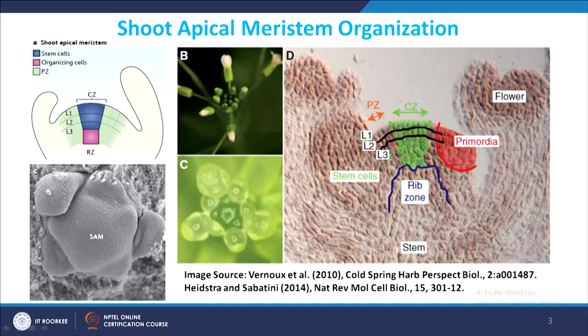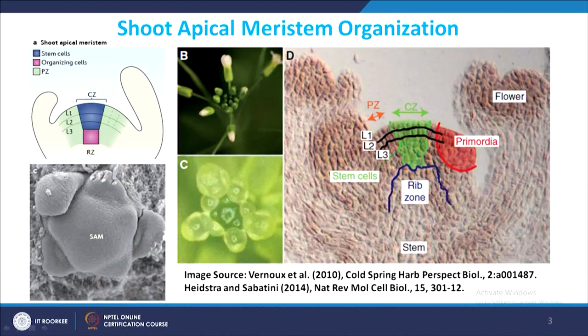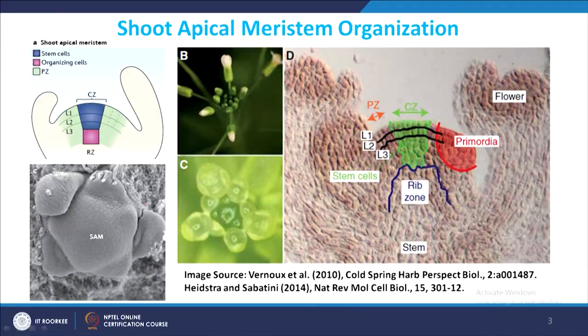Here is the view of the inflorescence meristem — it looks very similar. In the inflorescence meristem you also have a central zone, peripheral zones, and ribbed zones. Stem cells are maintained in the central zone where cell division activity is very dominant and differentiation is inhibited. When cells enter the peripheral zones, they initiate organ-specific developmental programs: during vegetative phase the lateral organs will be leaves; during reproductive phase the lateral organs will be flowers.